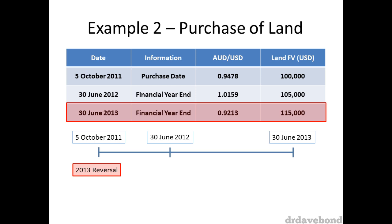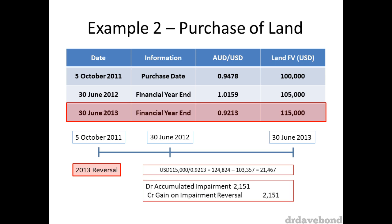On the 30 June 2013 the impairment was reversed. Not only has the land value in US dollars continued to increase, but the AUD has weakened. This leads to a calculation of the recoverable amount of $124,824. This is above the ceiling of $105,507, so the change is simply a complete reversal of the prior year loss, taken through as a gain of $2,151.